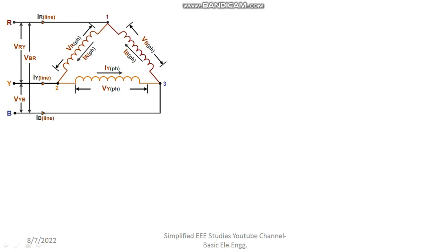First of all, I want to derive the relation between the phase voltage and line voltage. Look at the line voltage. The line voltages are V_RY line, and that is equal to V_R phase. If you want, you can write V_R by phase — both are fine.